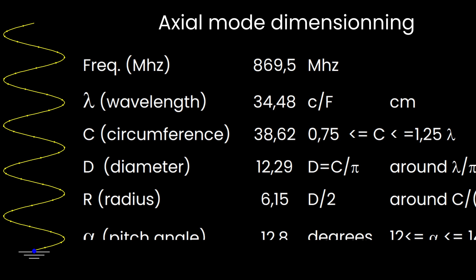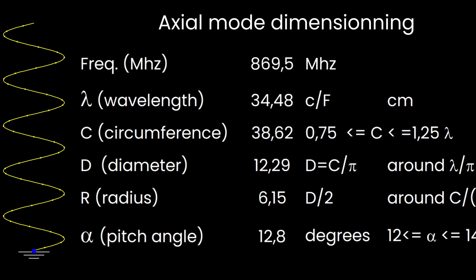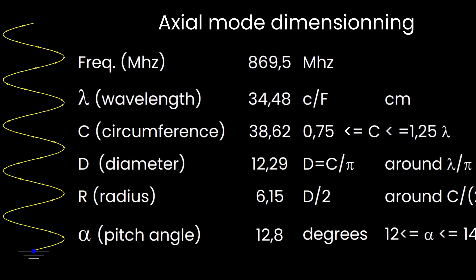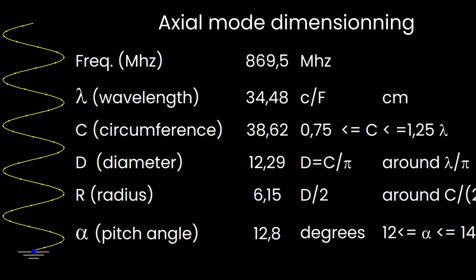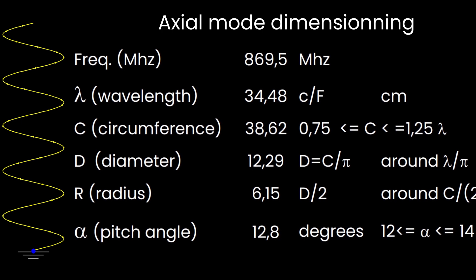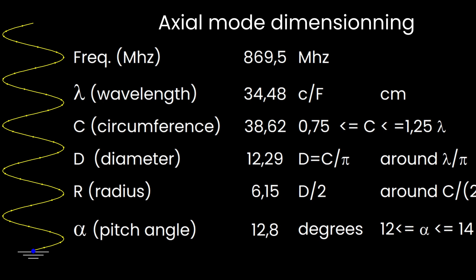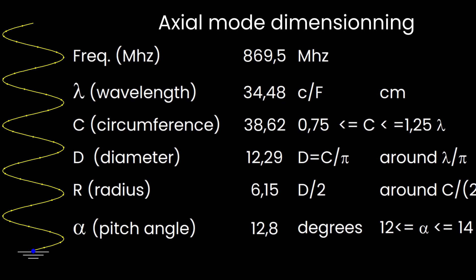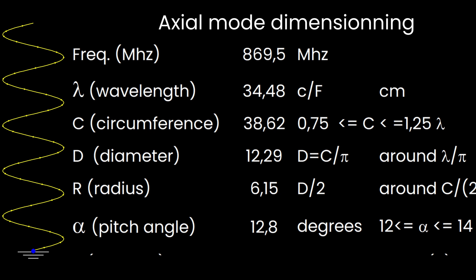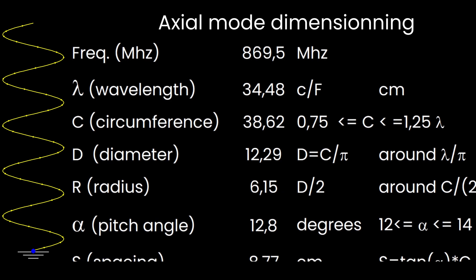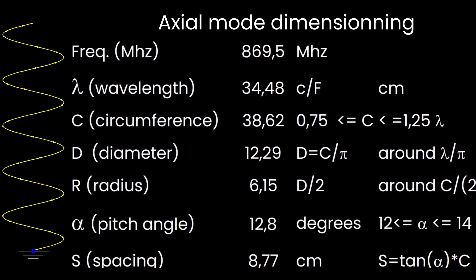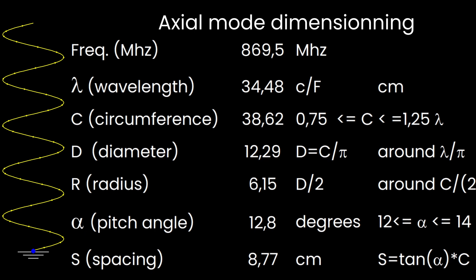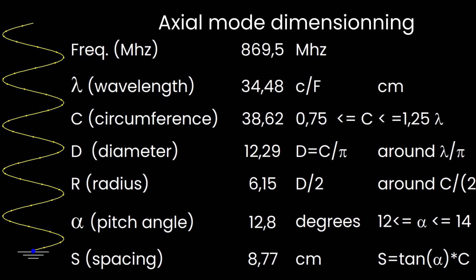Another best practice and empirical rule says that the optimum pitch angle, alpha, for an axial mode must be between 12 and 14 degrees. So here for this exercise, let's choose it to be 12.8 degrees. Knowing now the alpha angle and C, the circumference, we can derive the spacing S, which is defined by the following formula. S equals tangent of the angle alpha times C, which gives 8.77 centimeters.